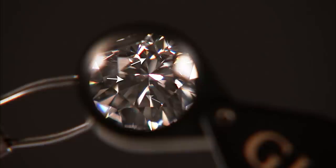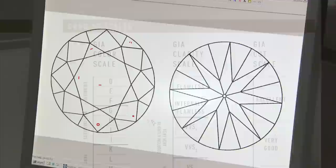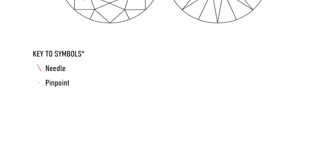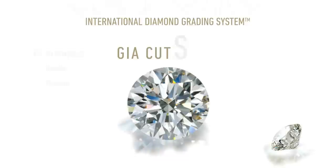Diamond clarity evaluates the number, size, relief, nature, and position of internal inclusions and surface blemishes. GIA assigns one of 11 clarity grades, ranging from flawless to included, and lists the most prominent clarity characteristics. On some report formats, clarity characteristics are shown as a plotted diagram, marking significant or identifying characteristics. A key lists the relevant symbols and their definitions.